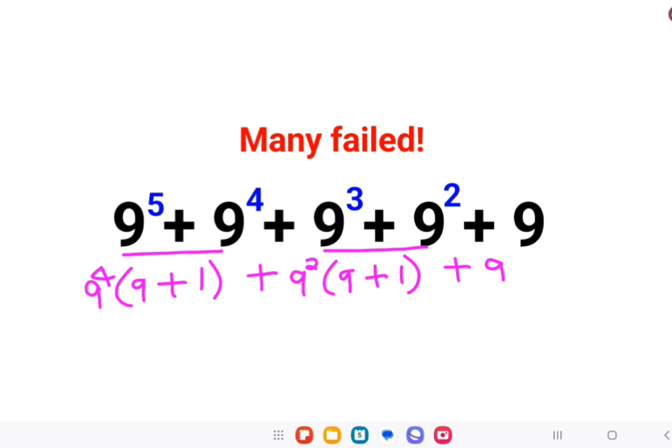So next what we can do is out of these two I can say 9^2 can be taken as common and I am left with 9^1 also taken out. So I am left with 9^2 from here.